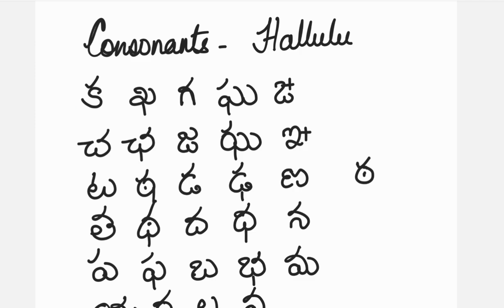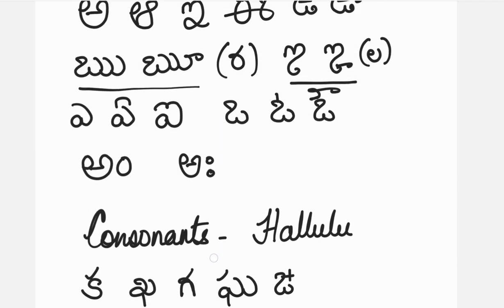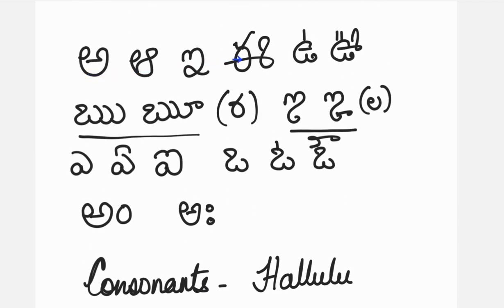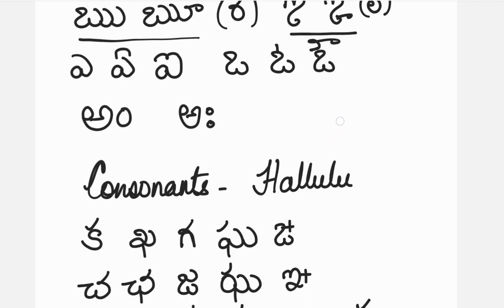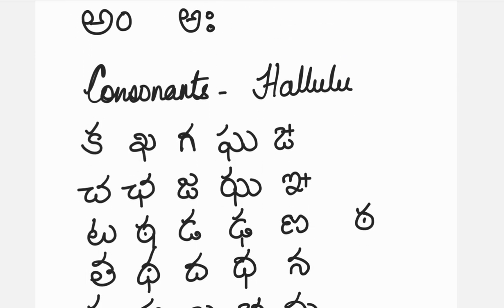So how do we make them Ka, kha, ga, gha, or Ki, khe, ghe — that is, how do we add the other vowels to the consonants? We do it with the symbols given to these vowels. In the next video we shall learn to add the symbols, and later on learn how to add the vowels to the consonants to get all the letters of the Telugu alphabet.